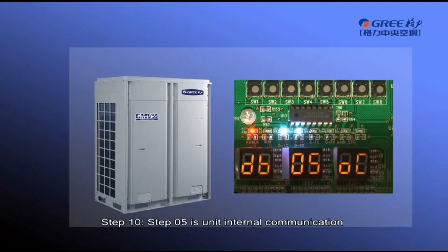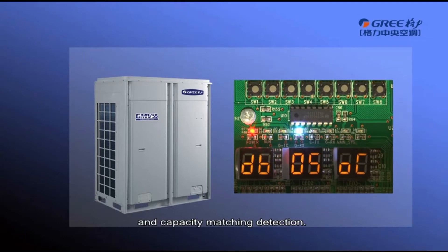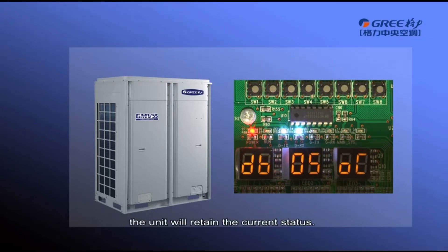Step 5 is unit internal communication and capacity matching detection. If the detection is abnormal, the unit will retain the current status.